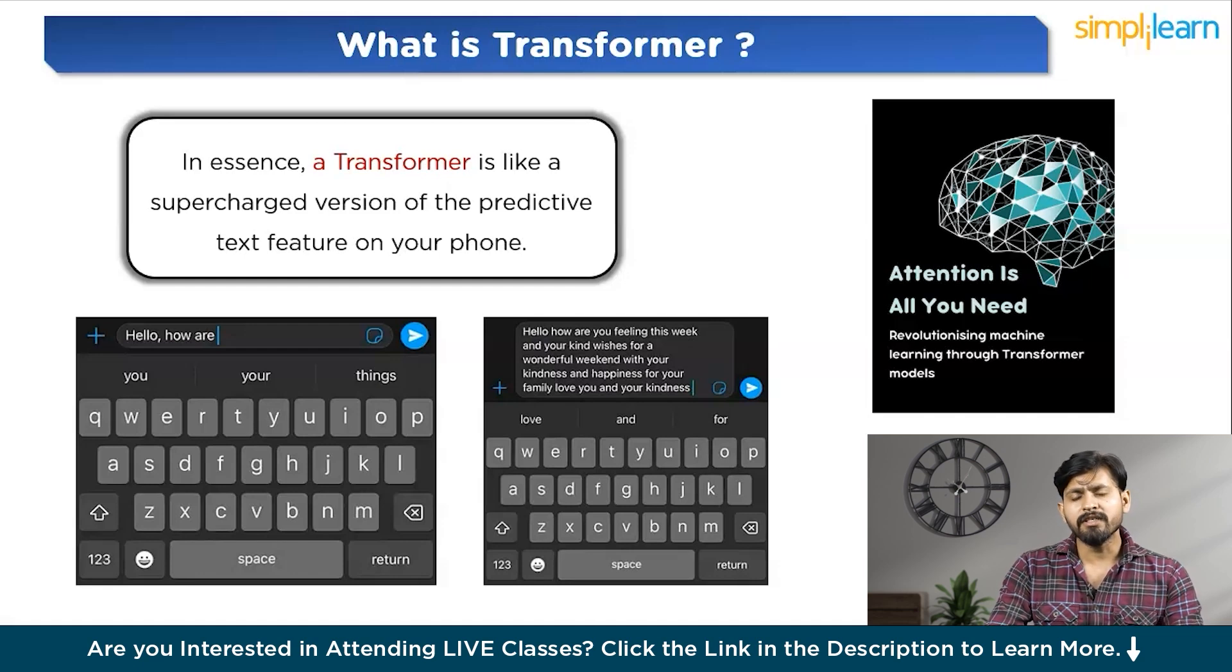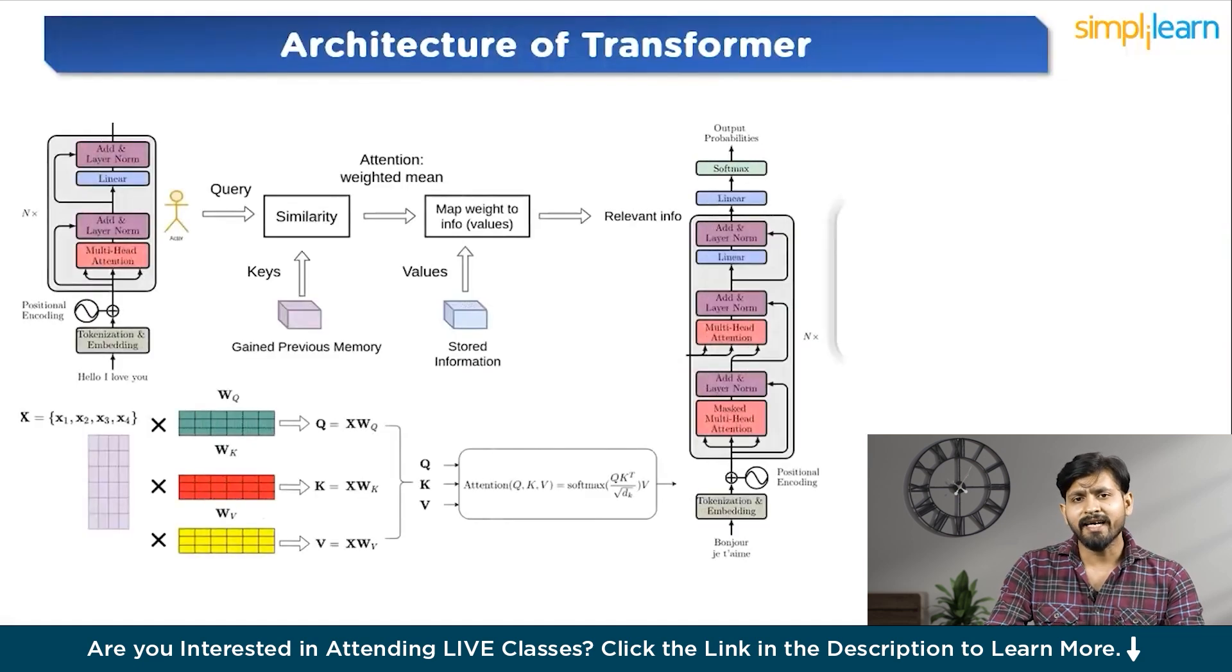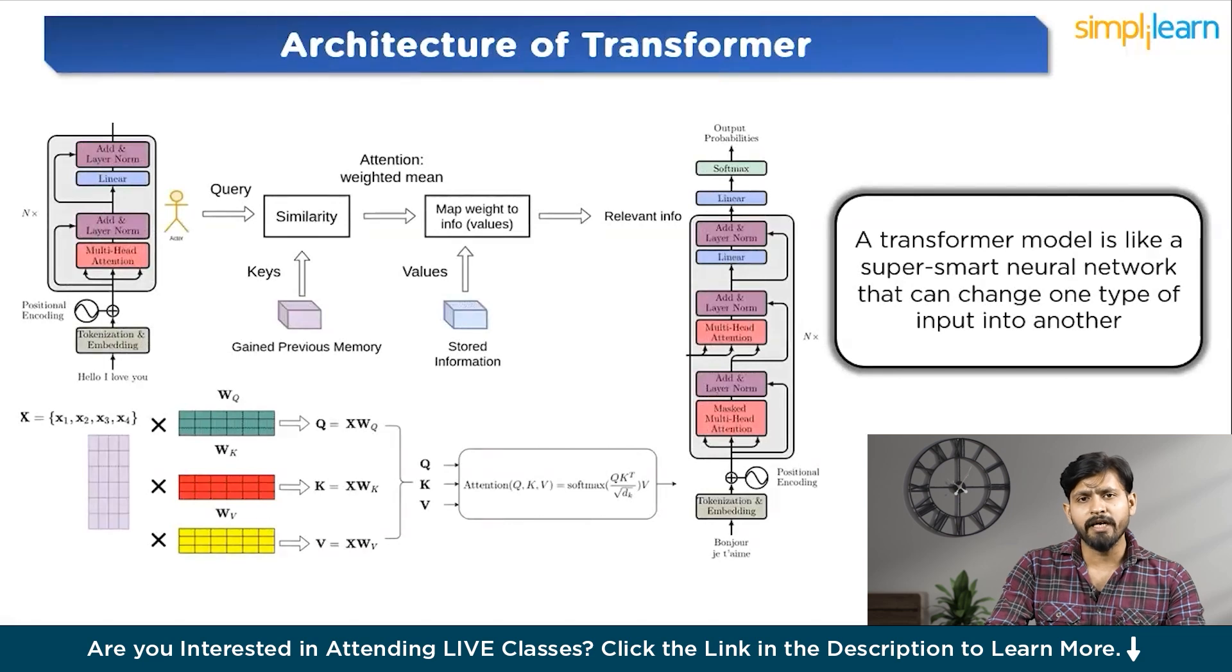You would be wondering, what is the technical definition of Transformer? A Transformer model is like a super smart neural network that can change one type of input into another. It got its name from a 2017 Google paper where researchers found a way to teach neural network to translate English into French really accurately and much faster than other methods. But what's cool is that Transformers turned out to be way more useful than just for translation. They can create text, images and even instructions for robots.